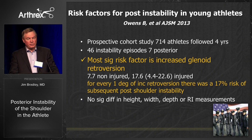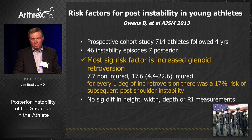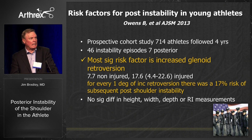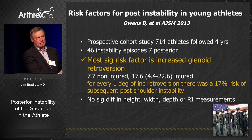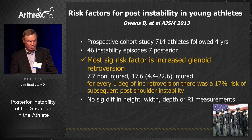Interestingly, the risk factors for posterior instability in young athletes — Brett Owens did a great paper within the military — show the most significant risk factor for posterior glenoid instability is increased retroversion. For every degree of increased retroversion over normal, there's a 17% increased risk of posterior shoulder instability in his highly athletic military population. So even though postoperatively it didn't seem to make a difference for us, preoperatively if you have increased version, you're probably at greater risk.